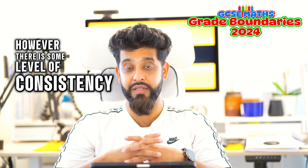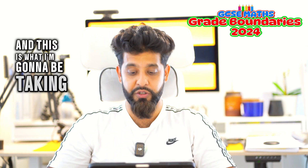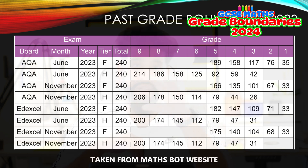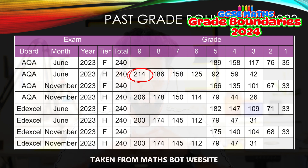However, there is some level of consistency with grade boundaries, and this is what I'm going to be taking you through right now. On the screen in front of you, you should see the grade boundaries of 2023, the previous year. We've got AQA at the top and Edexcel at the bottom. I've included information taken from the Math Spot website — the June summer exams and the November resit exams for each examining board. I'm only focusing on AQA and Edexcel as they are the most popular ones. If you look at AQA, taking the higher paper as an example, you needed 214 marks in 2023 to get a grade nine. For the November resit, you needed 206 — so the boundary slightly went down.